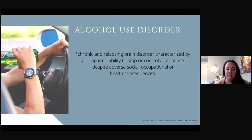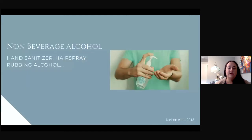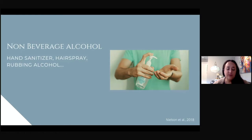People who access MAPs live with severe alcohol use disorder. My next concept is non-beverage alcohol, or NBA. Within the homeless population living with severe alcohol use disorder, drinking non-beverage alcohol, or NBA, such as rubbing alcohol, hand sanitizer, and hairspray, is prevalent due to its easy access, higher alcohol content, and lower cost than beverage alcohol.